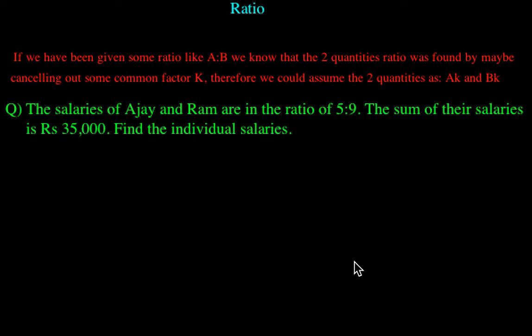Here we will be looking at the basics of ratio. The first property of ratios is that if we have been given some ratio like A to B, we know that the two quantities ratio was found by canceling out some common factor K. Therefore, we could assume the two quantities could be AK and BK. Basically, AK upon BK is nothing but A upon B, which is the ratio A is to B. K can cancel out. Note that K can even be 1 here.